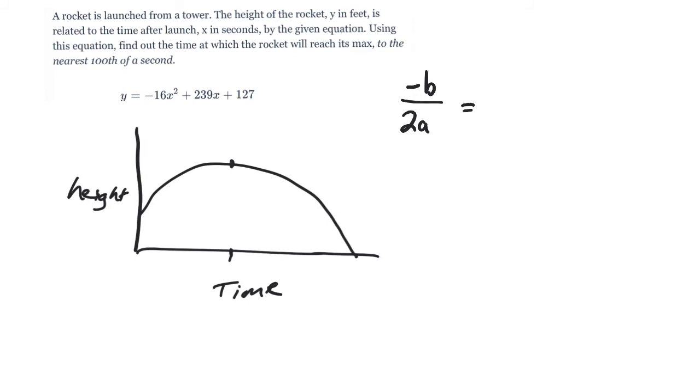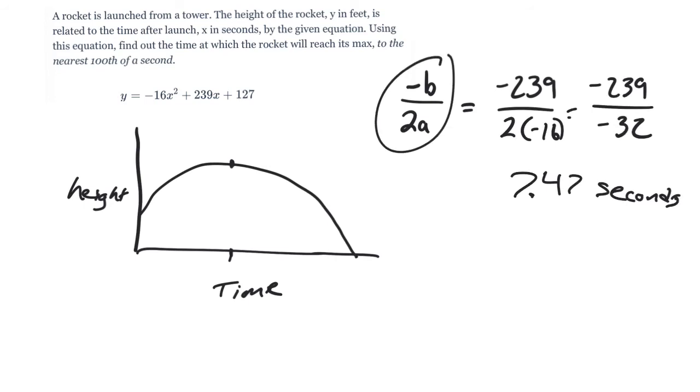So negative b over 2a is negative 239 divided by, it will be negative, but I'm trying to write it out as 2a. So it would be 2 times negative 16, which will end up being negative 239 over negative 32. And when you type that on your calculator, you end up with 7.4. And we're going to round to the nearest. So it would be, instead of 4, 6, it's 4, 6, 8. We'll make it 4, 7 seconds. That's all you're doing here. Negative b over 2a will give you the x value of the vertex of your parabola. And that's all we need on this one.